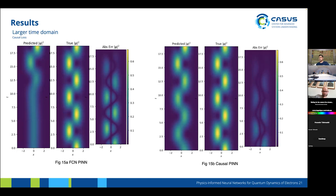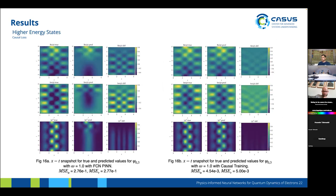These are the results with the larger time domain. The causal PINN solution on the right is much better than the normal fully connected PINN. However, it's still a challenge to get the correct solution for very large time steps with PINNs. For higher energy states, the fully connected PINN with the normal loss function shows large errors, while the PINN with causal training shows errors lower by orders of magnitude.